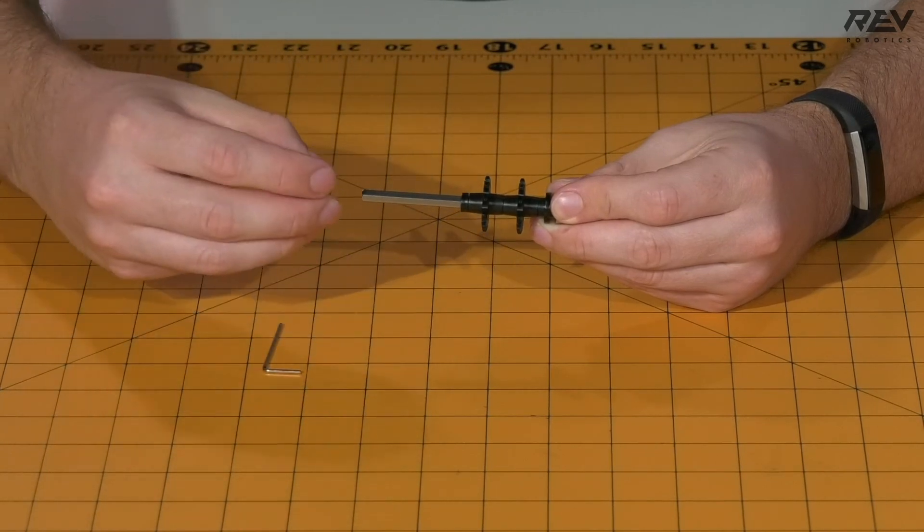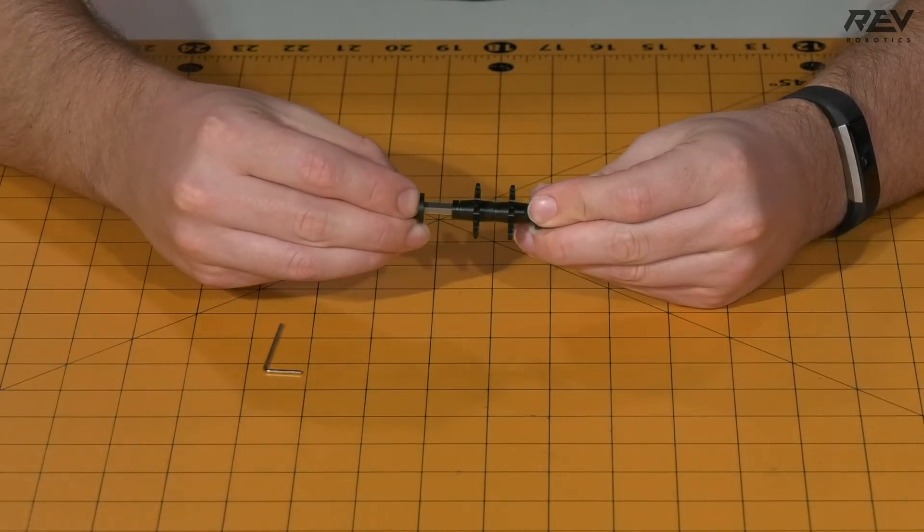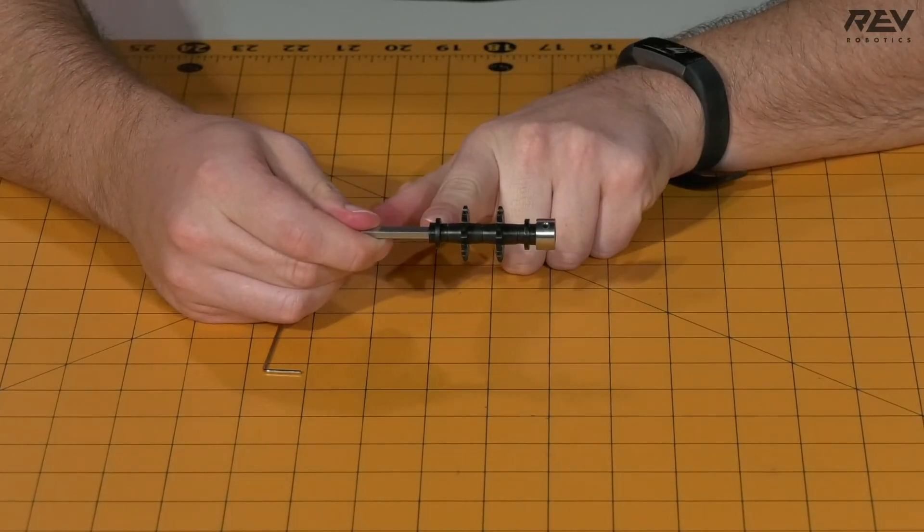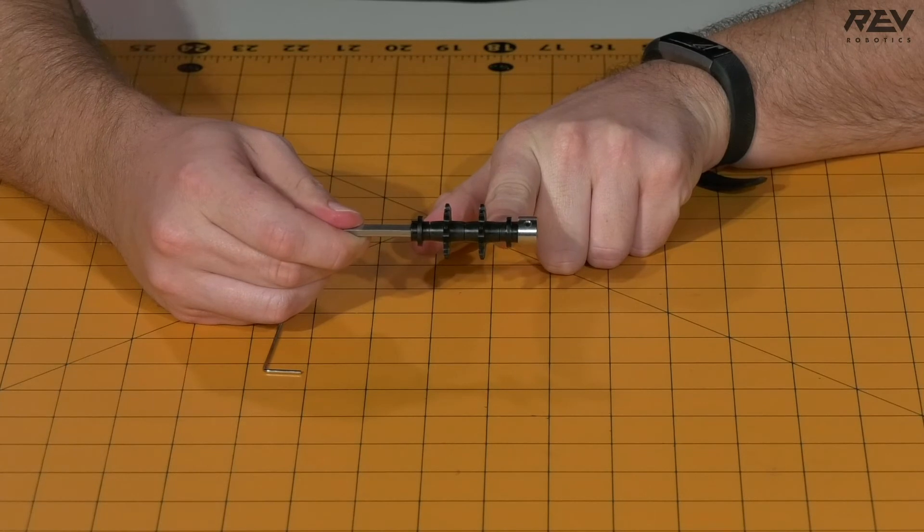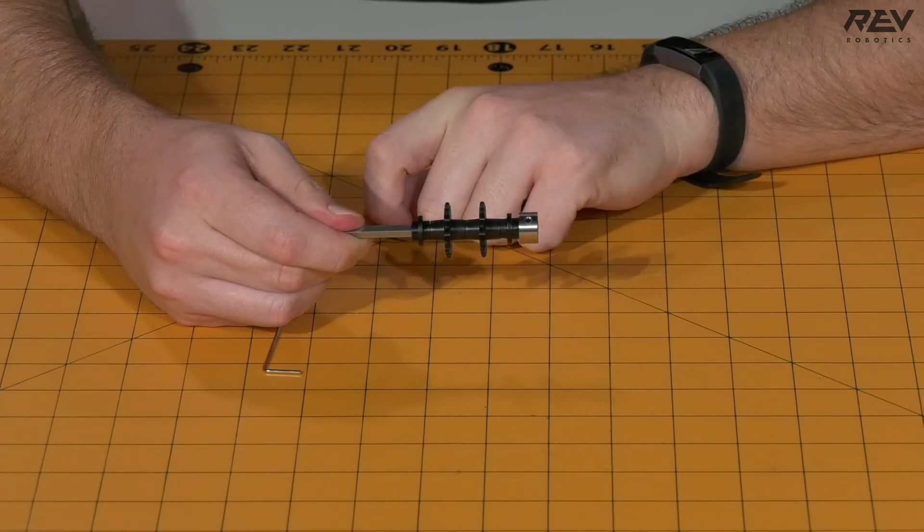Lastly, take the final short through-bore bearing and slide it on. It's important to note the location of this flange is the opposite of the first through-bore bearing. This is important during the final assembly.